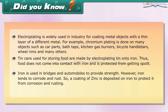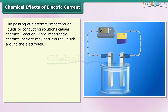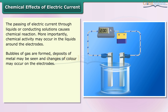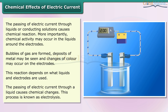The passing of electric current through liquids or conducting solutions causes chemical reactions. Chemical activity may occur in the liquids around the electrodes — bubbles of gas are formed, deposits of metal may be seen, and changes of color may occur on the electrodes. This reaction depends on what liquids and electrodes are used. The passing of electric current through a liquid causes chemical changes, and this process is known as electrolysis.